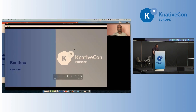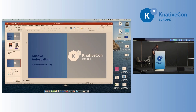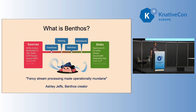That was Muru's part — thank you for that, and sorry for the technical difficulties. Let me move to the next part of the talk and go into Benthos. So what is Benthos? As Ashley Jeffs, the Benthos creator, likes to describe it: it's fancy stream processing made operationally mundane. Benthos is a very simple thing — it's a single static binary. It supports many sources and many syncs like real-time, batch, file storage, etc. You provide a configuration specifying your sources, your syncs, and various operations that happen on the messages in flight from source to sync.